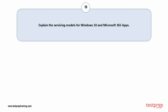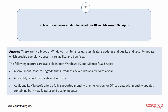Question number 13: Explain the servicing models for Windows 10 and Microsoft 365 apps. There are two types of Windows maintenance updates — feature updates and quality and security updates — which provide cumulative security, reliability, and bug fixes. The following features are available in both Windows 10 and Microsoft 365 apps: 1. A semi-annual feature upgrade that introduces new functionality twice a year. 2. A monthly report on quality and security. 3. Additionally, Microsoft offers a fully supported monthly channel option for Office apps, with monthly updates containing both new features and quality updates.